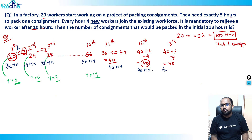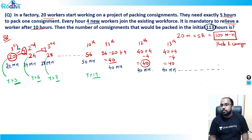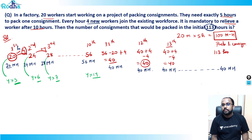This pattern of 40 man-hours per hour continues all the way through to 113 hours. So from hour 11 to hour 113, that is 103 hours, 40 man-hours of work is done each hour.